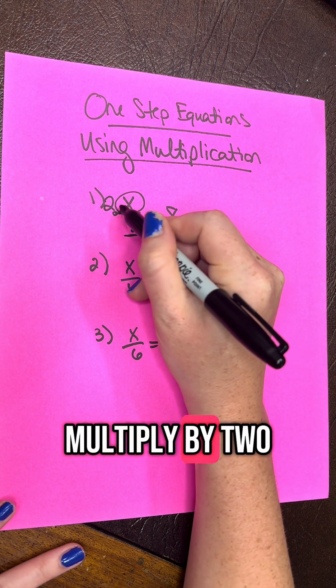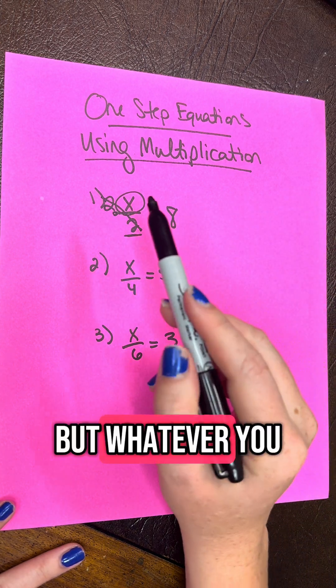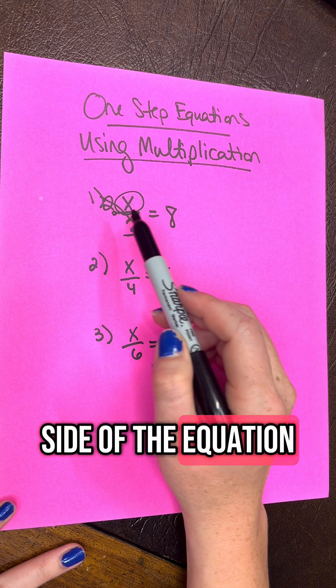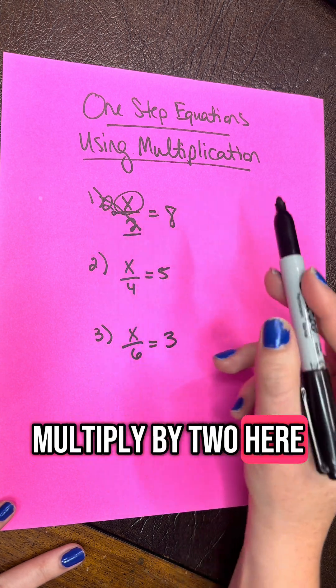And when you multiply by 2, you can cross out those x's. But whatever you do to one side of the equation, you need to do the same thing to the other side of the equation. So because we multiplied by 2 here,